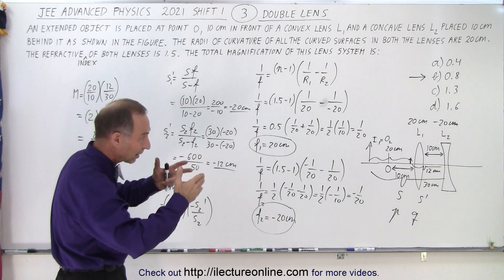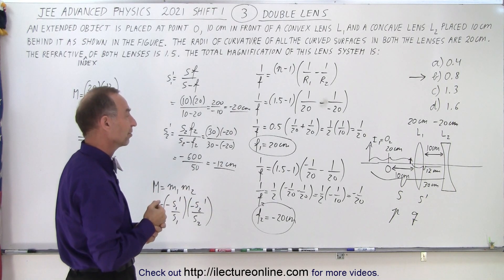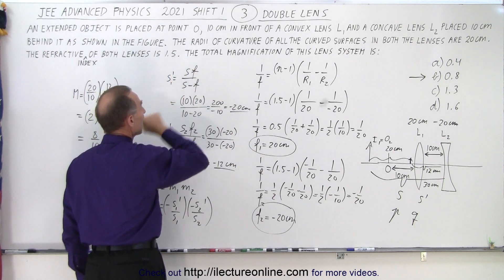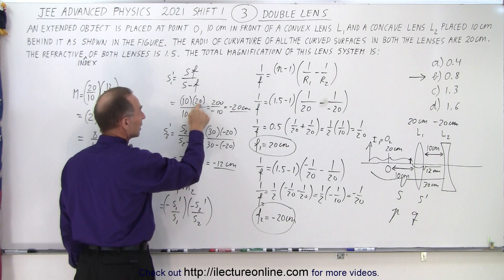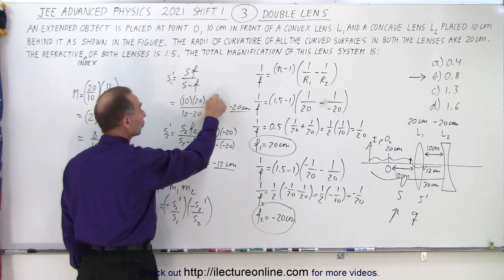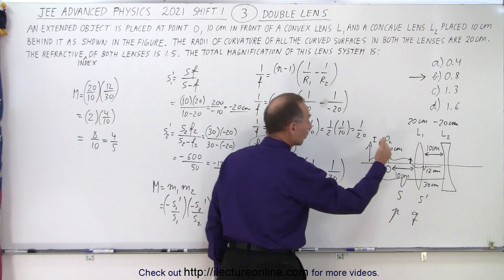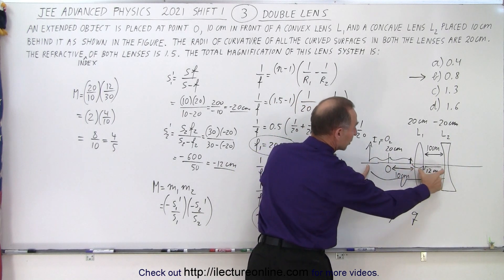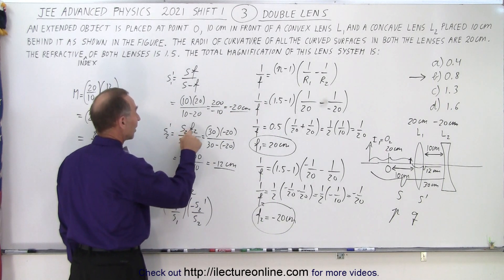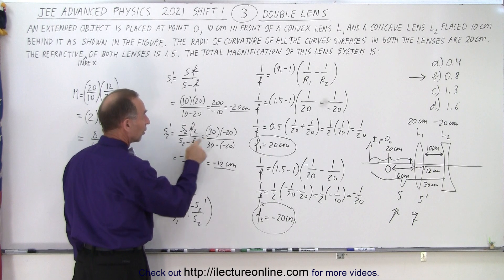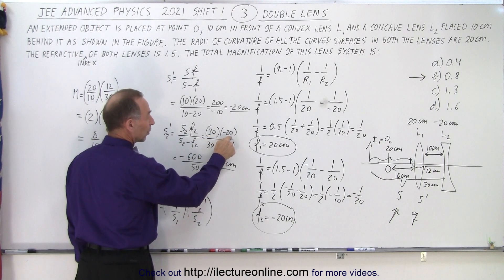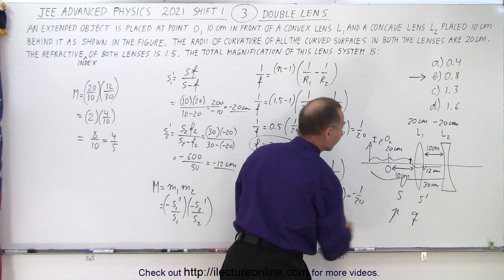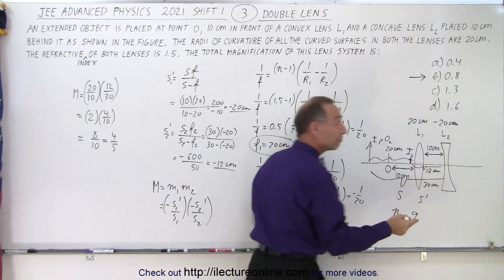Since the second lens has the same curvature but is a diverging lens, it has a focal length of minus 20 centimeters. Using S' equals SF over S minus F for lens one: object distance is 10 centimeters, focal length is 20, so 10 times 20 divided by 10 minus 20 equals 200 over negative 10, which is minus 20 centimeters — the image is 20 centimeters in front of the first lens. Adding 10 centimeters gives 30 centimeters in front of the second lens. For lens two: 30 times negative 20 divided by 30 minus negative 20 equals negative 600 over 50, which is minus 12 centimeters — the final image is 12 centimeters to the left of the second lens.